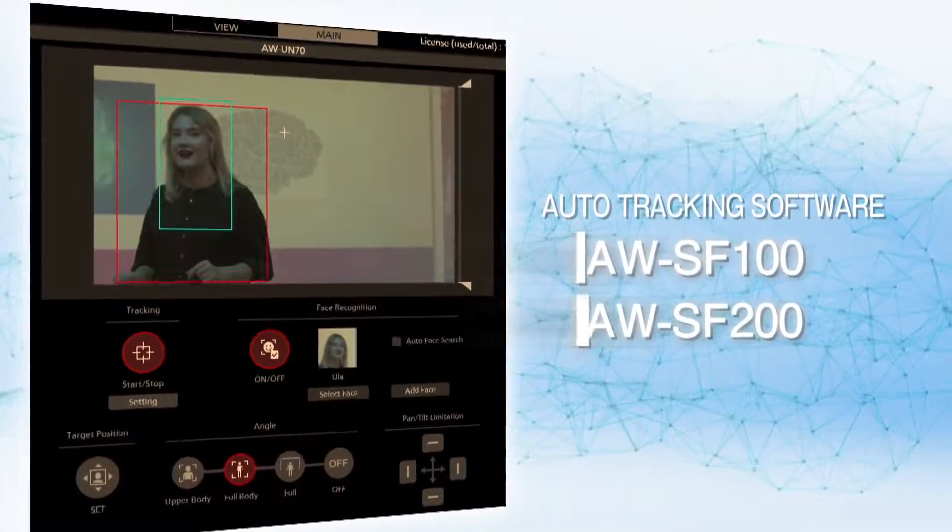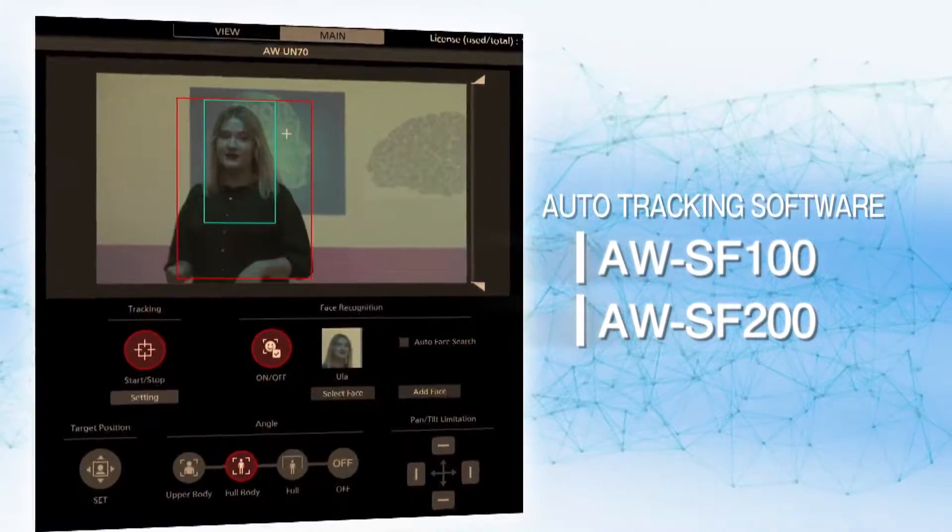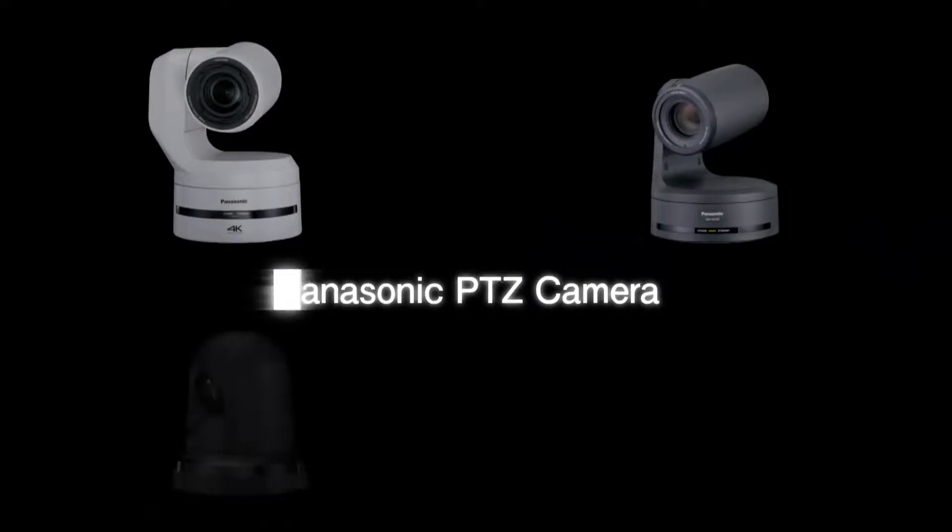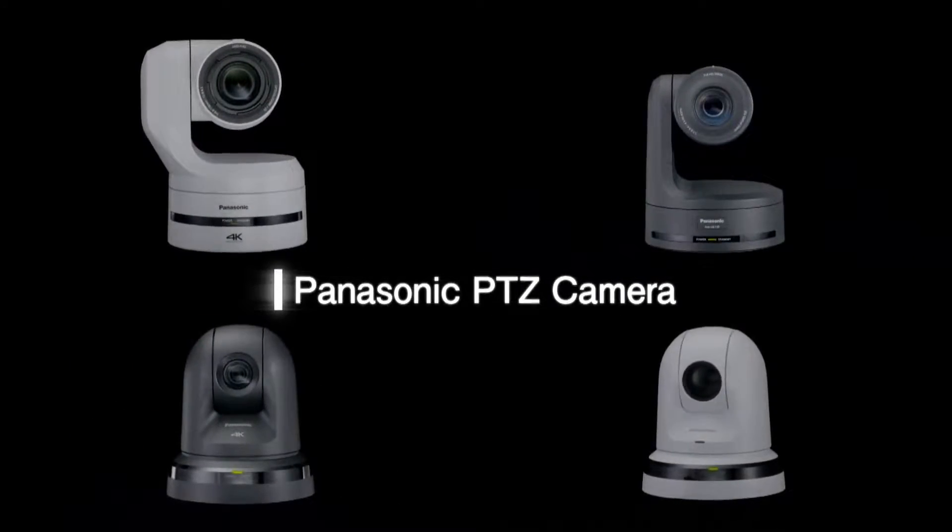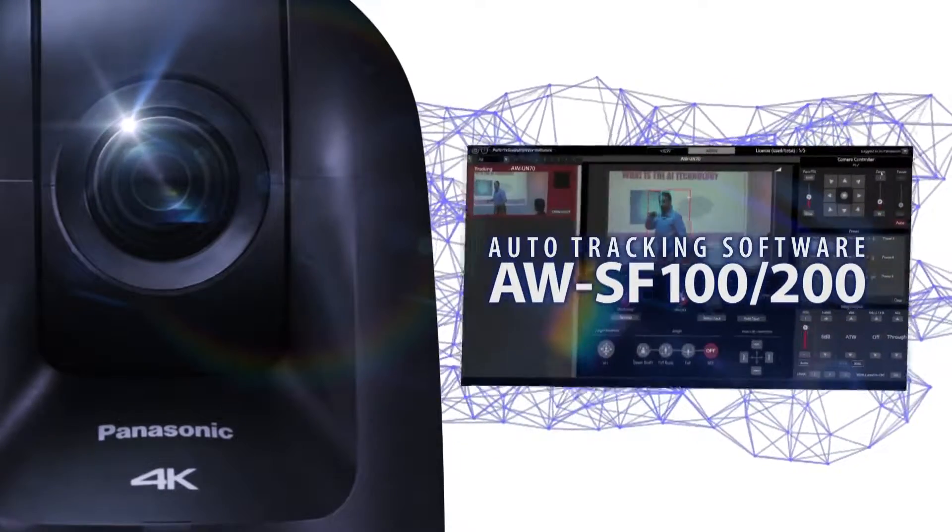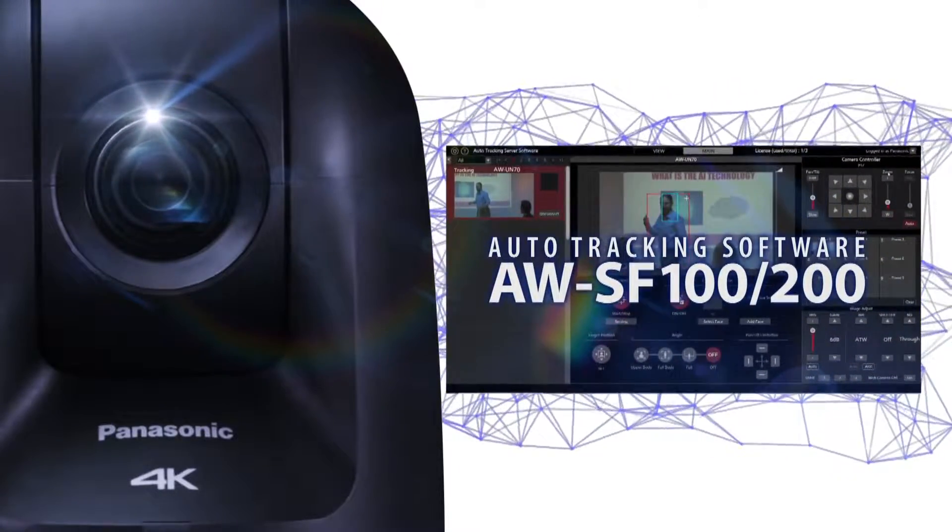Installing the auto tracking software AWSF100 and 200 adds an automatic tracking capability to your Panasonic PTZ camera, allowing you to track target individuals automatically. You can simply add this capability by installing the software on your existing system.